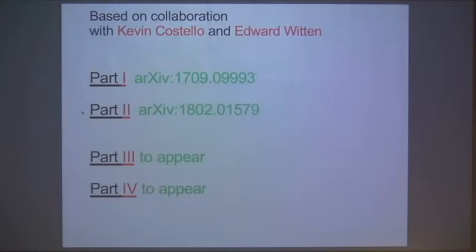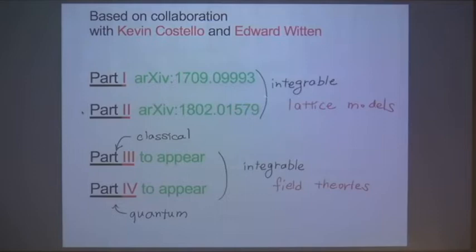The difference between part one and two, and part three and four, is that the first two papers discuss integrable lattice models, whereas the last two discuss integrable field series — quantum field series. What I'm going to do today is to explain the contents of part three and four in such a way that the connection to the first two papers is manifest, so that you get the overall picture of what's happening.